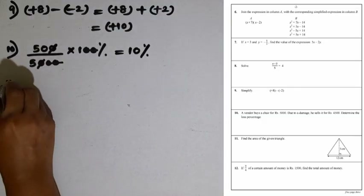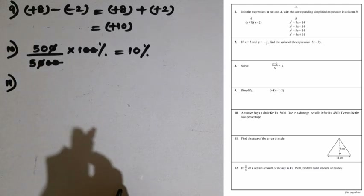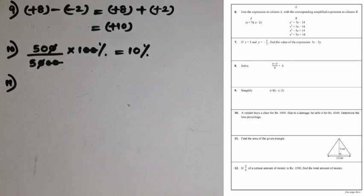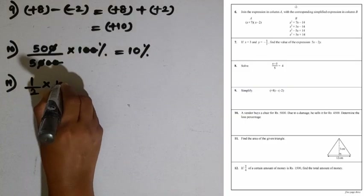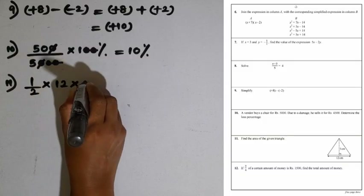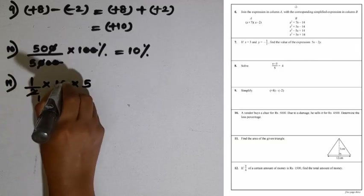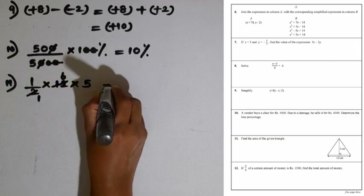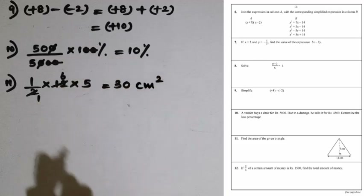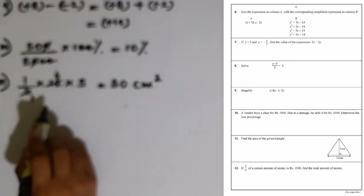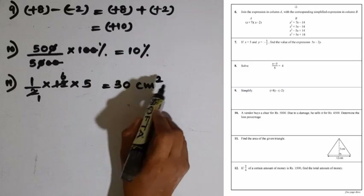Question number 11: find the area of the given triangle. The area of a triangle is half into the base into the perpendicular height. So half multiplied by 12 multiplied by 5: 2 into 6 gives 6, and 6 into 5 is 30. The unit of area is square centimetres, so the area is 30 square centimetres.